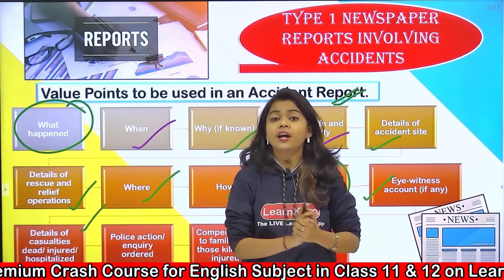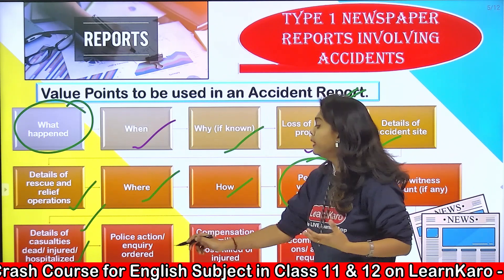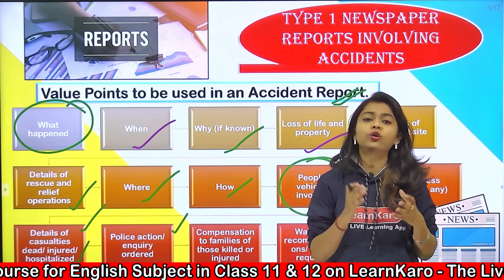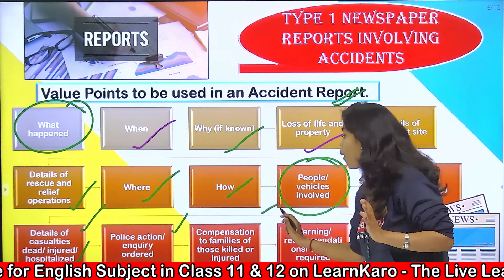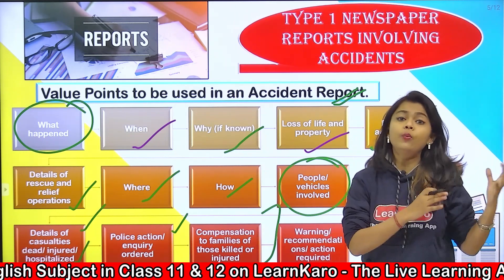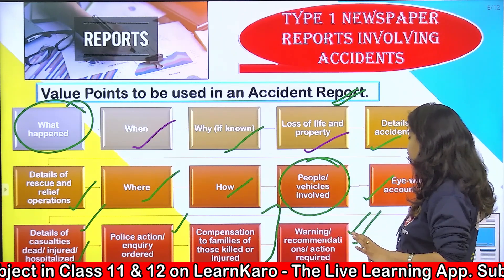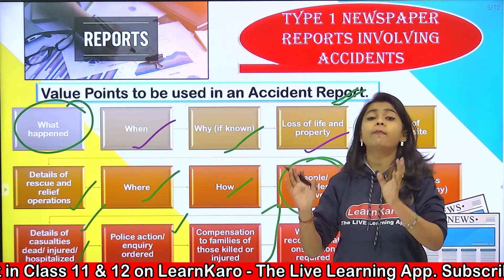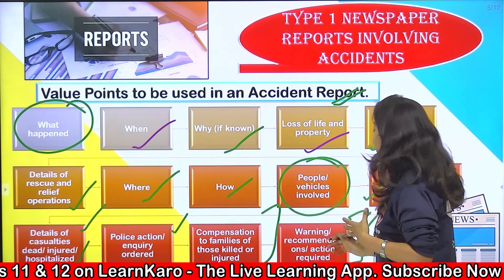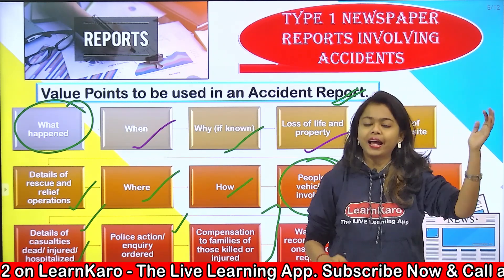Details of casualties — if anybody is injured, dead, ya hospitalized ho, mention karna hota hai. Next, agar koi accident hai to wahan par police action bhi require ho sakti hai, to inquiry is ke baare mein aap mention kar sakte ho. Next, compensation — jo ki pay karti hai government for the families of those jo ki kill hue hain ya injured hue hain in that particular accident. Next, warning, recommendations, ya actions required — to be last paragraph mein jab aap conclusion likh rahe ho, ki ye jo bhi accident hua definitely bahut bura hua, and warning ya recommendation ya action required jo ki hona chahiye by higher authorities.